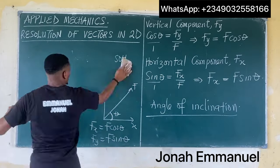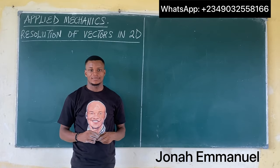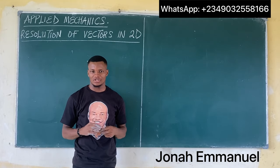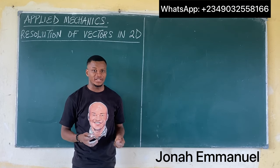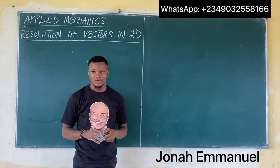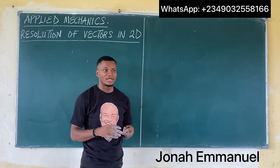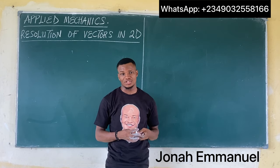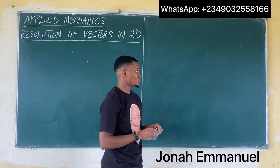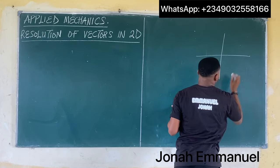Let's look at something else. The first condition when resolving a vector is the angle of inclination — whether it's to the horizontal or to the vertical. The second task is to look out for the quadrant in which the vector falls. In a 2D system, we have four quadrants.